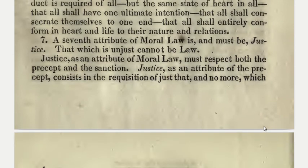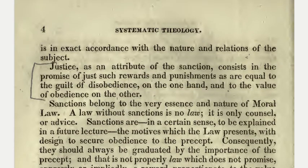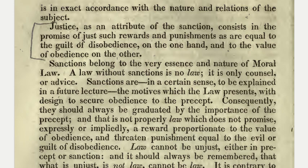A seventh attribute of moral law is and must be justice. That which is unjust cannot be law. Justice, as an attribute of moral law, must respect both the precept and the sanction. Justice as an attribute of the precept consists in the requisition of just that and no more which is in exact accordance with the nature and relations of the subject. Justice as an attribute of the sanction consists in the promise of just such rewards and punishments as are equal to the guilt of disobedience on the one hand, and to the value of obedience on the other. Sanctions belong to the very essence and nature of moral law.